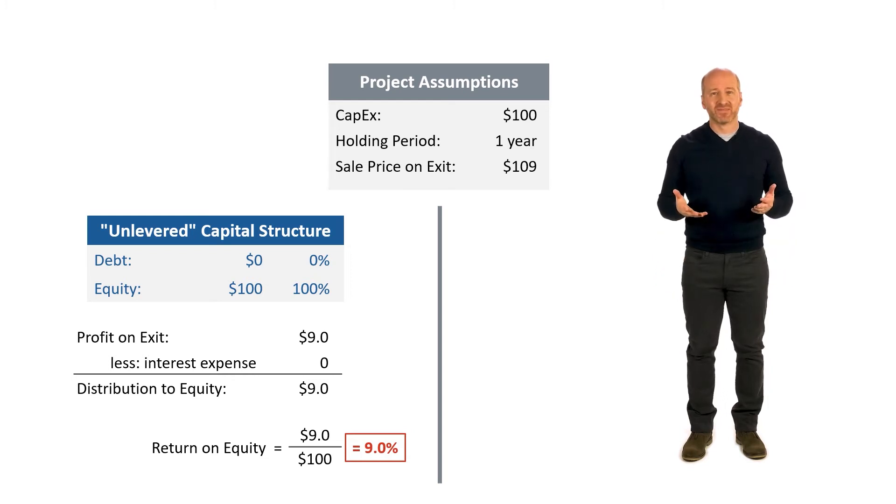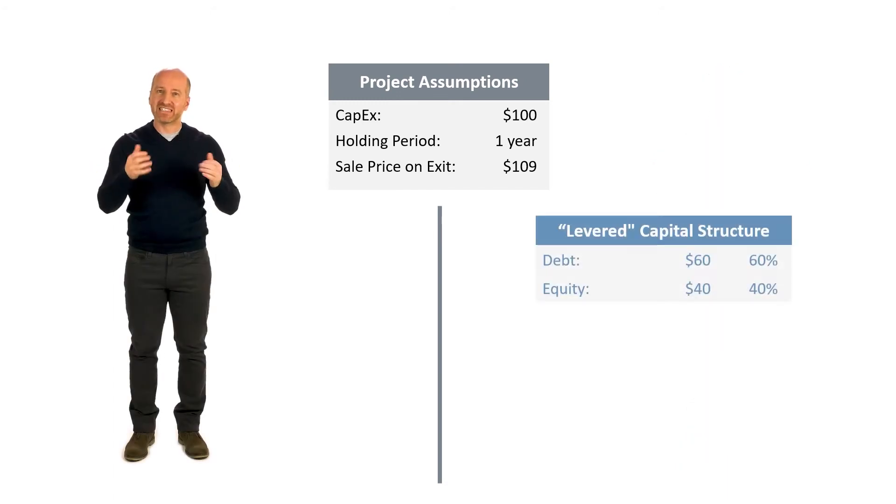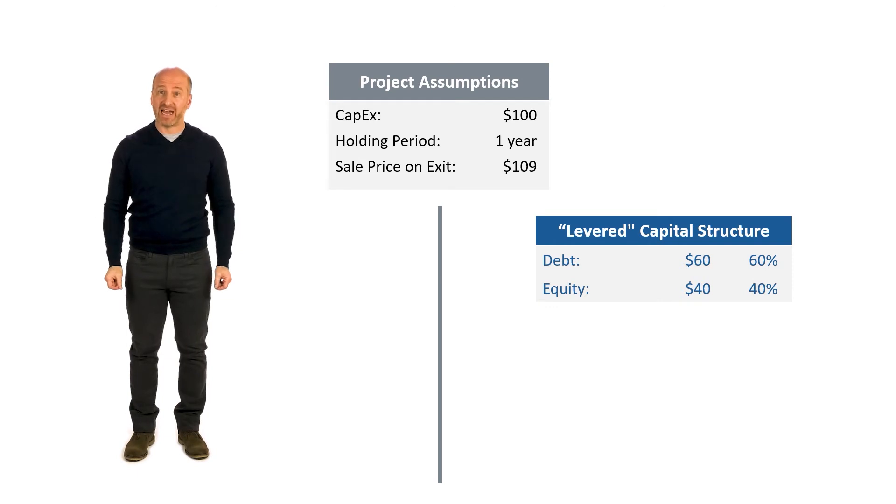By comparison, if the project was levered, let's say we borrowed $60 in debt and funded this project with only $40 in equity to pay for the full $100 in capex. This is what it might look like.